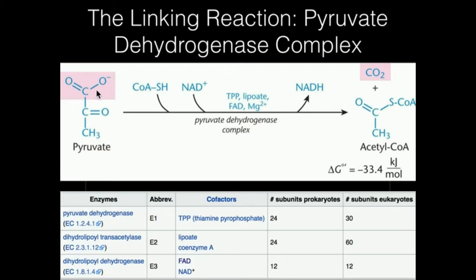By far the largest source is from pyruvate generated through glycolysis. We can also generate acetyl-CoA through beta-oxidation but that doesn't involve this enzyme. So the point is acetyl-CoA is used in a lot of different areas. If we don't need any more acetyl-CoA — say we have an excess of it — we should probably turn this enzyme off. But if we're in need of lots of acetyl-CoA for energy production in the TCA cycle, then we could turn this on. So it's very important to regulate this enzyme.